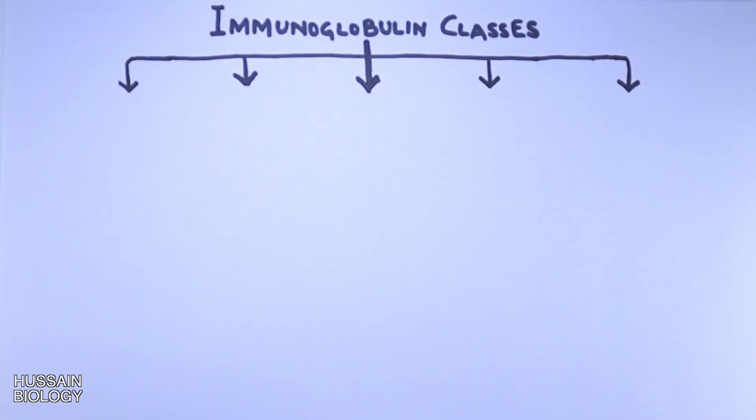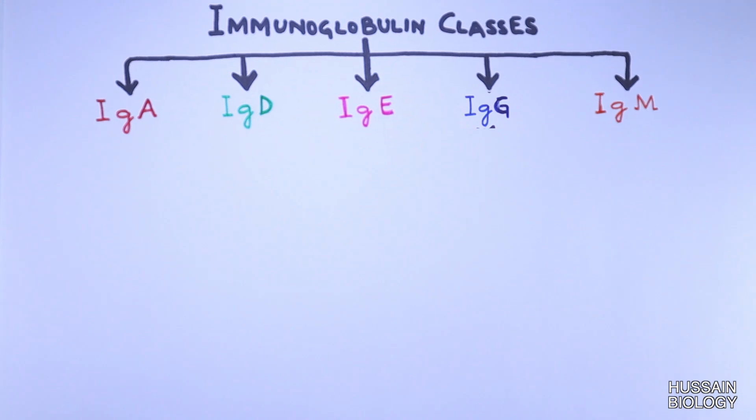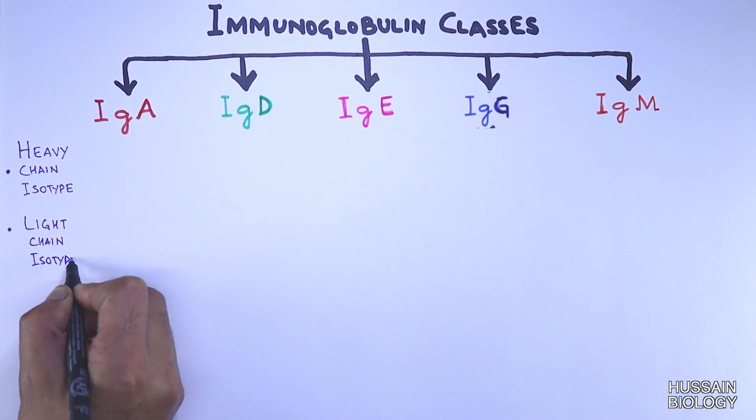Immunoglobulin classes are defined by heavy chain isotype in its structure. We have five different classes of immunoglobulins: IgA, IgD, IgE, IgG, and IgM. In our discussion we will see the heavy chain isotype, light chain isotype, percentage of total immunoglobulin,